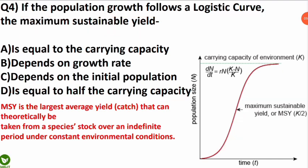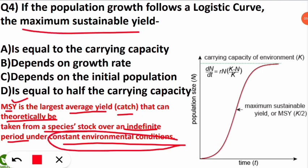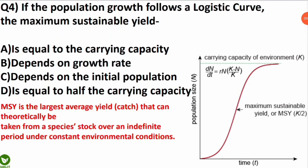The correct option is that the maximum sustainable yield in a logistic growth curve is equal to half the carrying capacity. Maximum sustainable yield is the largest average yield or catch that can theoretically be taken from a species stock over an indefinite period under constant environmental conditions. The formula for the rate of change of population is dN/dt = rN × (K - N)/K, where K is the carrying capacity and N is the population size.